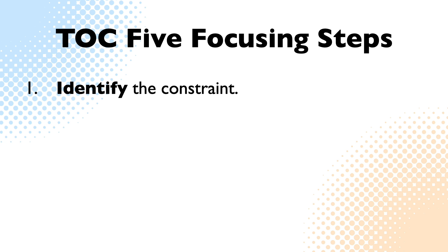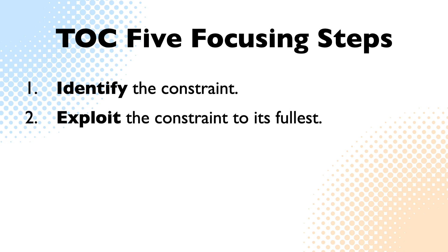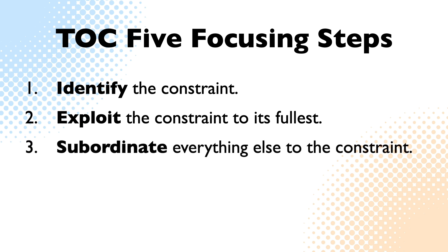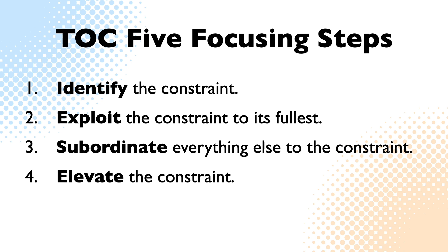Once the constraint is identified, it must be utilized as fully and efficiently as possible. All other processes in the system must be brought to the realization that serving the needs of the identified constraint is the highest priority. If simply managing the constraint efficiently is not enough, it must be elevated by having its capacity permanently increased. And finally, if after taking action the constraint is no longer the core constraint, it is said to have been broken. In such cases, there will inevitably arise another constraint which must be identified and managed by going through the steps again.